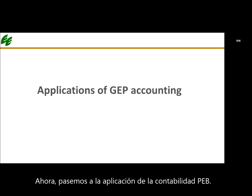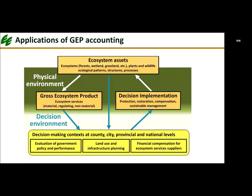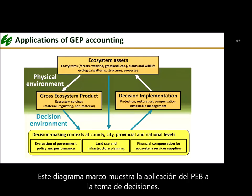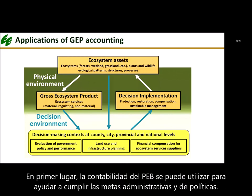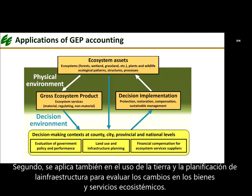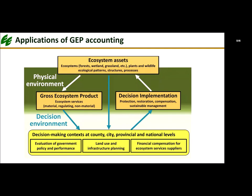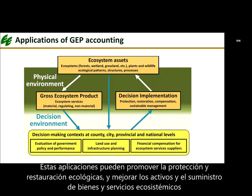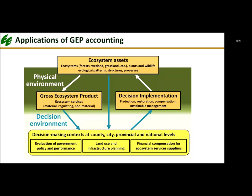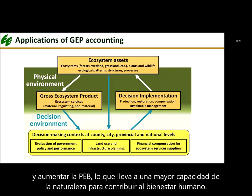Now let us move to the application of GEP accounting. This framework diagram shows the application of GEP to decision-making. First, GEP accounting can help meet policy and administrative goals. Second, it can be used for land use and infrastructure planning, allowing us to evaluate how changes impact ecosystem goods and services. Third, it can be used to formulate eco-compensation policies, particularly in determining reasonable payment amounts. Through these applications, we can promote ecological protection and restoration, improve ecosystem assets, enhance the supply of ecosystem goods and services, and grow GEP, leading to a greater ability for nature to contribute to human well-being.